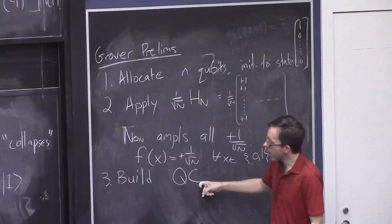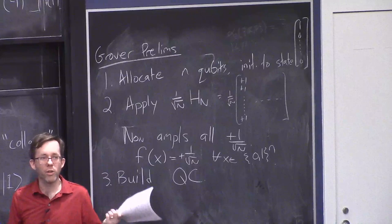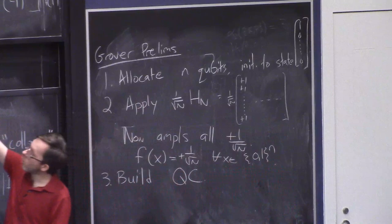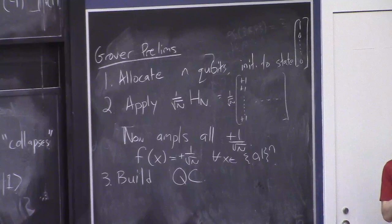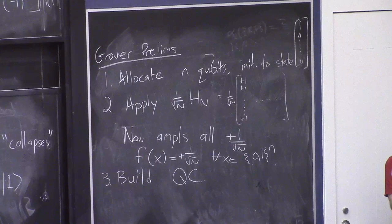What does this quantum circuit QC do to states? We're assuming C outputs 0 on all but one string x-star, where it outputs 1. So this matrix has all ones on the diagonal except for one negative one in the x-star position. The whole thing QC does is negate a single amplitude of the state — the one in the x-star position — which the algorithm does not know. But it now has this mystery box it can apply to the state that negates the x-star amplitude.